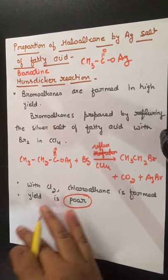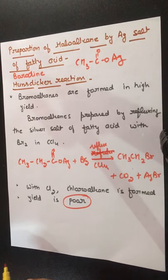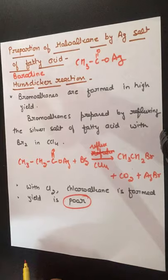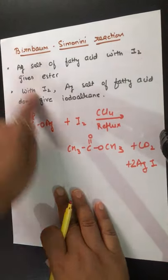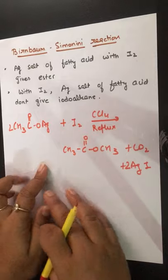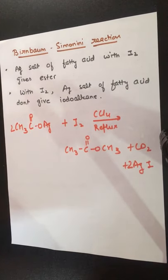So, what I told you in this video: we can prepare haloalkane by silver salt of fatty acid, but only with bromine. Refluxing with bromine gives bromoalkane. With chlorine, chloroalkane is formed but product yield is poor. And if the reaction is carried out with iodine, iodoalkane formation does not happen — instead we get an ester. So this reaction cannot be considered for the formation of iodoalkane or haloalkane via iodine. But you must know about this name reaction. Next topic will be discussed in the next video. Till then, goodbye.